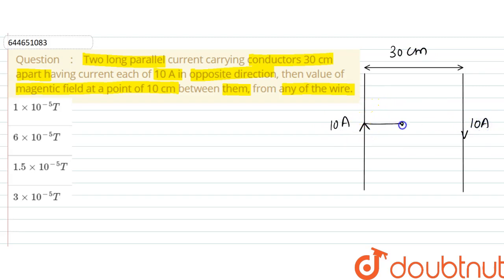We have to find the magnetic field at distance 10 centimeter from one wire which would be 20 centimeter from other, right? So let this be point P. So magnetic, let's say this is wire one and this is wire two.